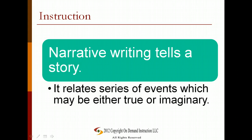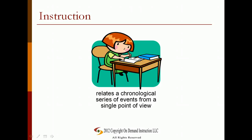Narrative writing tells a story. It relates a series of events which may be either true or imaginary. A narrative relates a chronological series of events from a single point of view, and is used to tell a complete story. Everything is told from a single point of view.